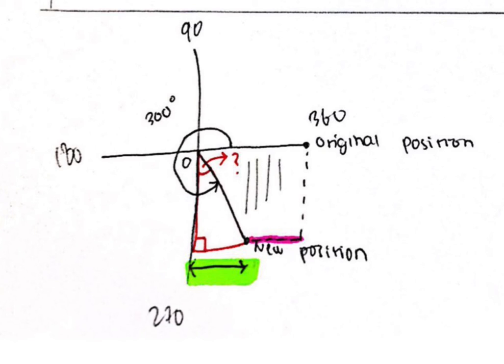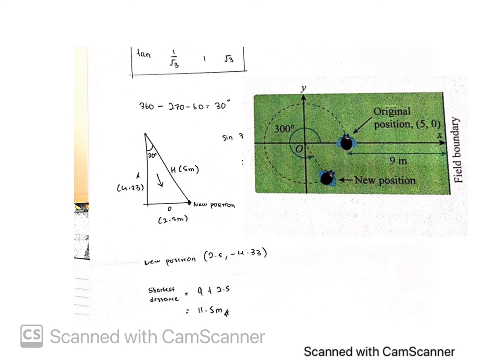Now, we have to find the length that is highlighted to find the length from new position to field boundary. Minus the coordinate from the original position, which is 5, with the new position, which is the opposite, that is 2.5 meter. And the answer will also be 2.5 meter.